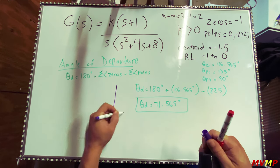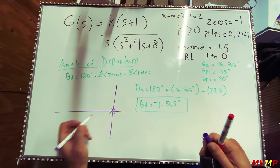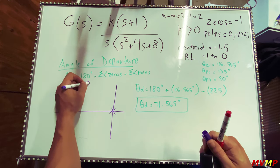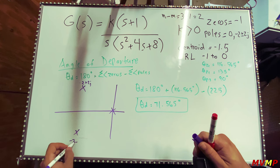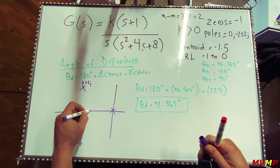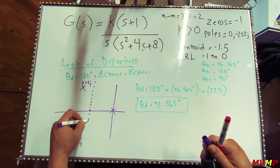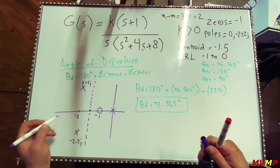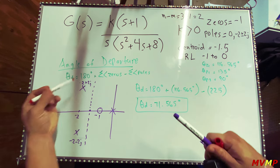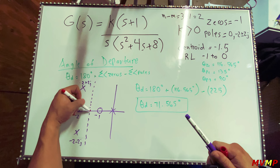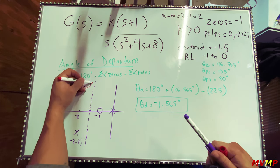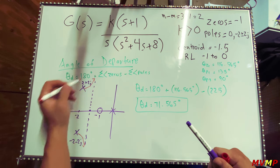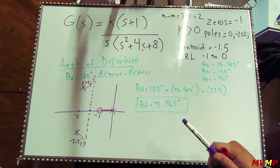Drawing this by hand: we have poles at zero, negative 2 plus 2j, and negative 2 minus 2j; a centroid at negative 1.5; and a zero at negative one. This is at negative 2, so the angle of departure goes toward the asymptotes at the centroid, and the root locus lies between zero and negative one.